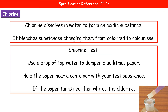Gas test number two: chlorine. Chlorine is a gas that dissolves in water to form an acidic substance, and it also acts as a bleach. When we test for chlorine, we dampen a bit of blue litmus paper — damp blue litmus paper — and it's going to go red, then white if chlorine is present. It goes red because it's acidic, and then it gets bleached, so it goes white. Damp blue litmus paper, red then white, is the test for chlorine.